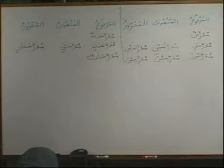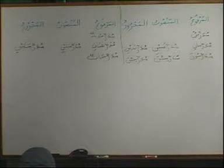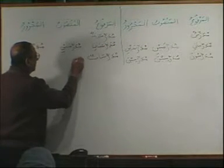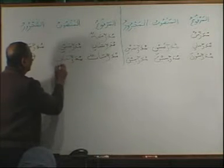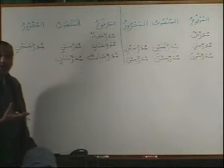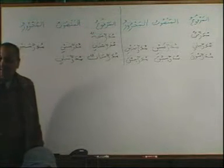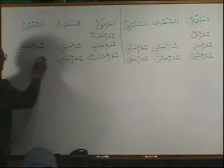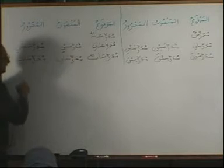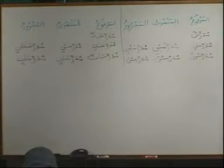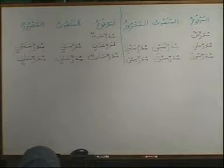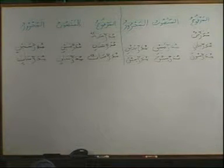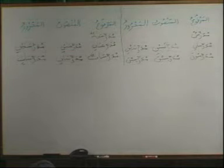Normally the Mansoob form is straightforward — if it is Tun, it will be Tan. But here, the Mansoob form becomes Mudarrisatin, not Mudarrisatan. What is going on? And the Majroor also becomes Mudarrisatin. So what is the rule? Brothers and sisters, the rule is: if it is a Jama Mu'annath Salim, when you make it Mansoob, you will make it Mansoob by giving it a Kasra, not a Fatah.